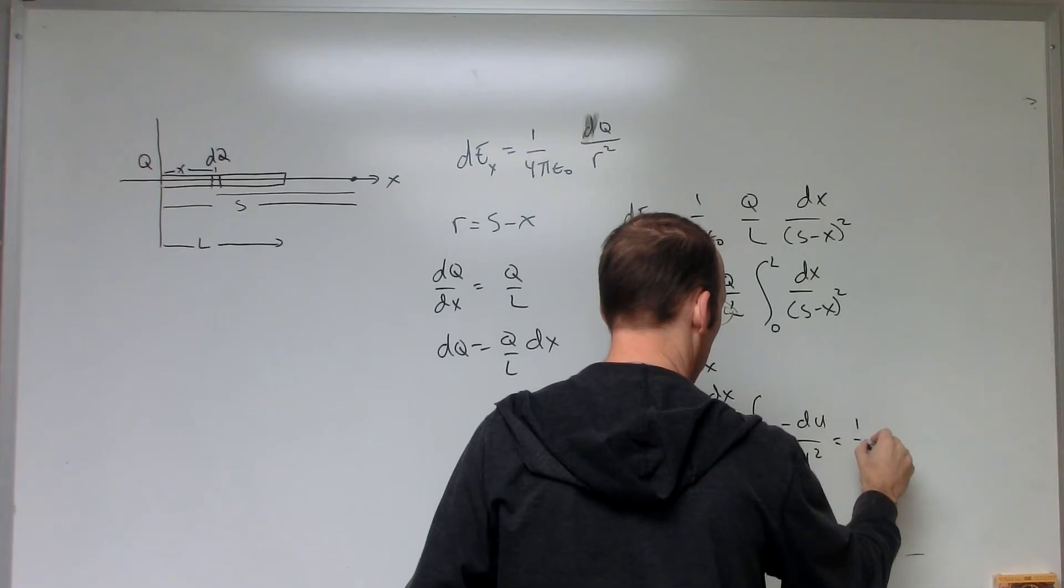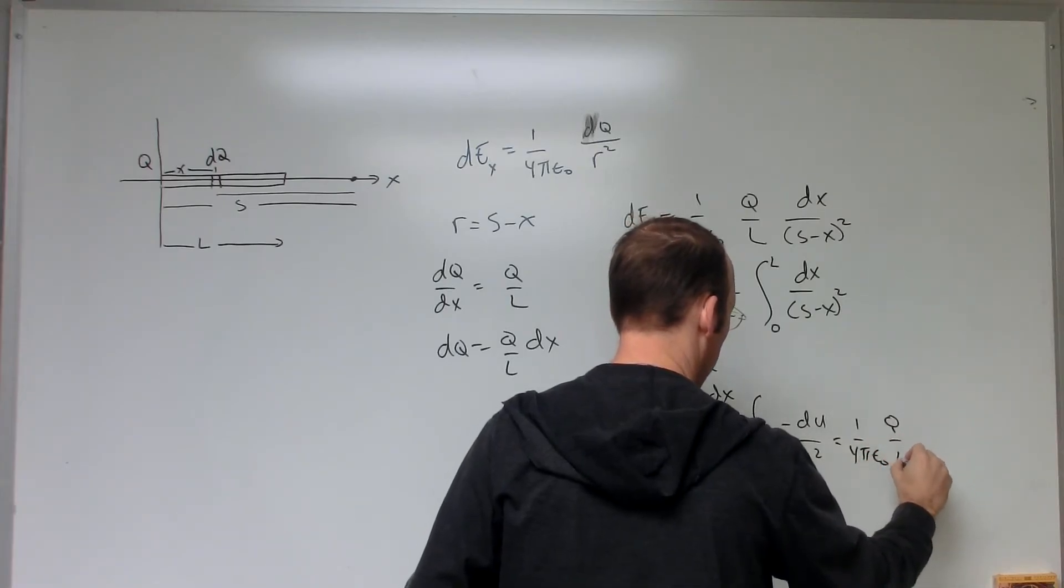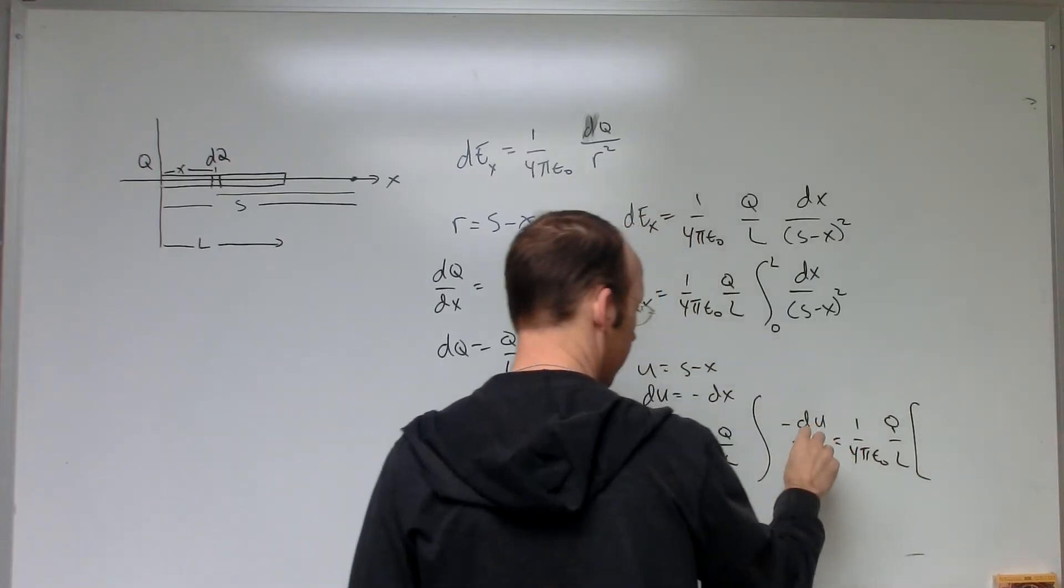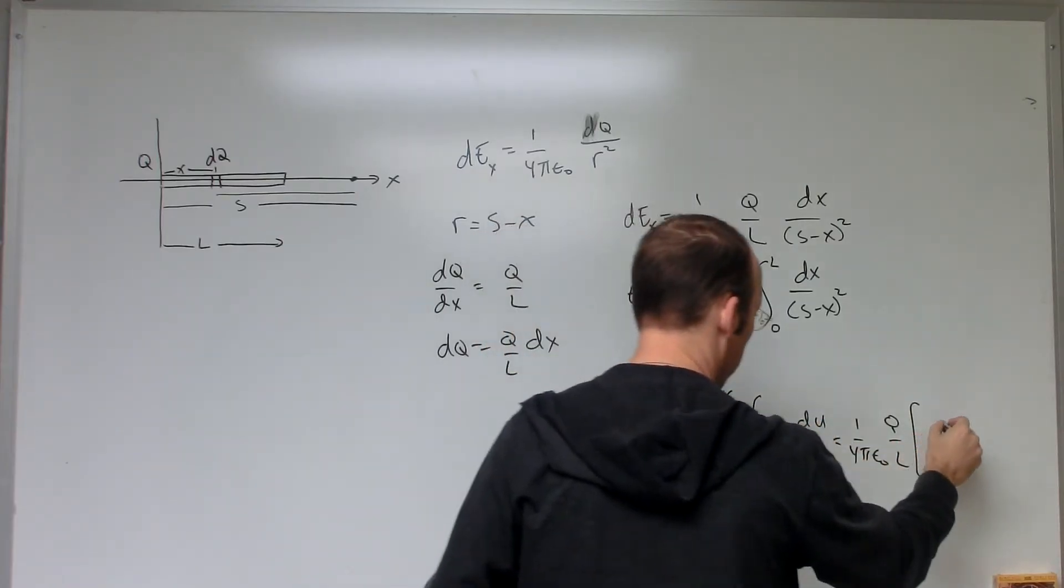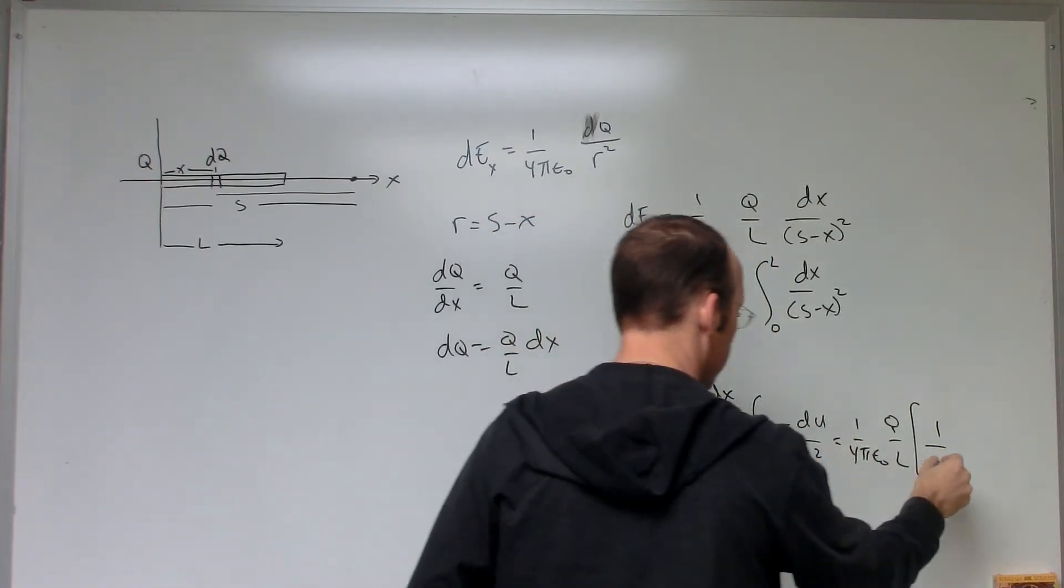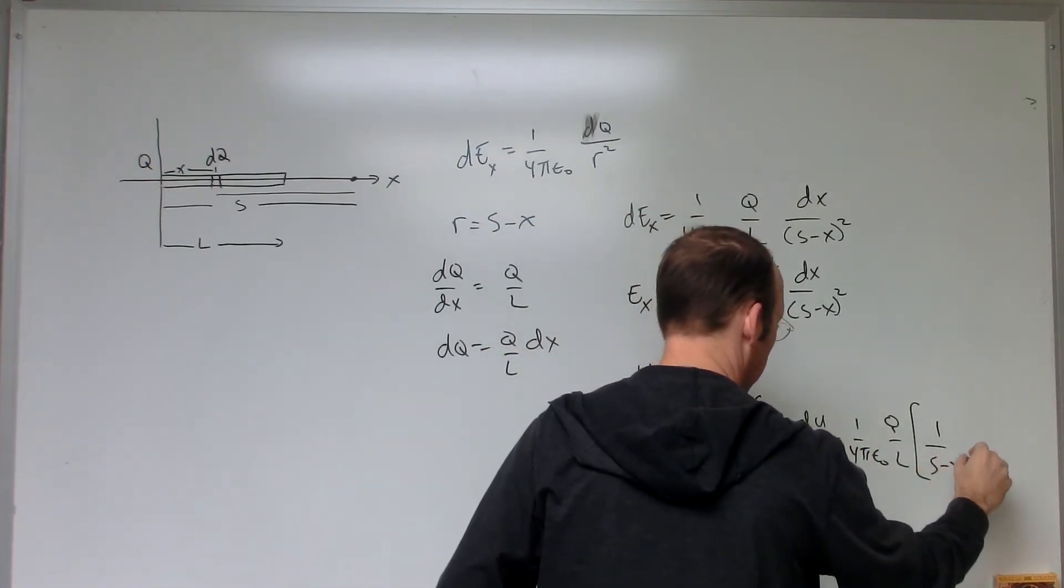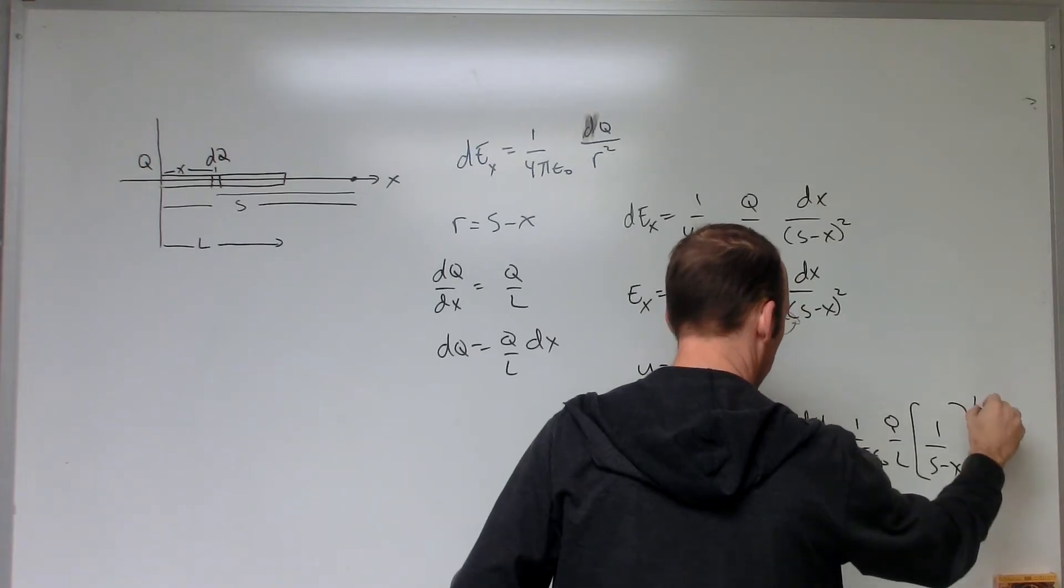And that's going to be equal to 1 over 4 pi epsilon naught, Q over L. And this is just going to be negative, it's going to be 1 over U. And U, I can put back in U of S minus X from 0 to L.